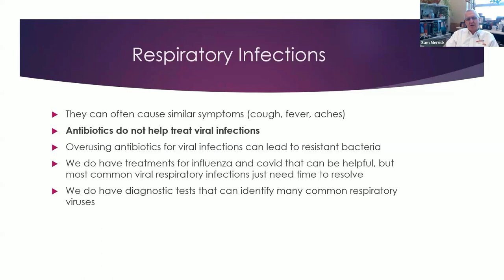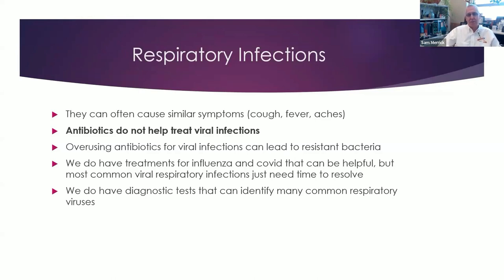We have PCR tests that can do a panel of 15 to 20 different viruses, but you're really only going to get that test in the emergency room. Bacterial infections can cause similar symptoms — cough, fever, aches — but the key thing is that antibiotics don't help treat viral infections. Antibiotics really only work for bacteria. More and more we have the ability to test; the home COVID test is a big breakthrough. Sometimes it's hard to sort out, and we try to discourage overusing antibiotics because that is leading to resistant bacteria.